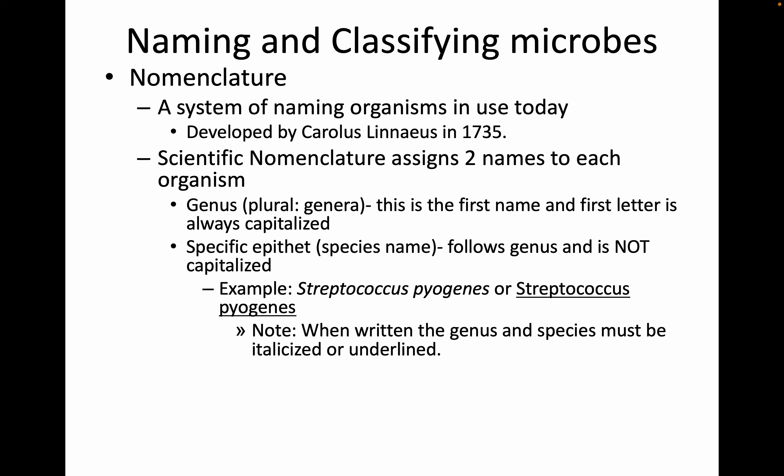Naming and classifying microbes uses nomenclature as a system of naming organisms. It was developed originally in 1735 by Carlos Linnaeus. Scientific nomenclature assigns two names to every organism: the genus, or plural genera, is the first name, and the first letter is always capitalized.